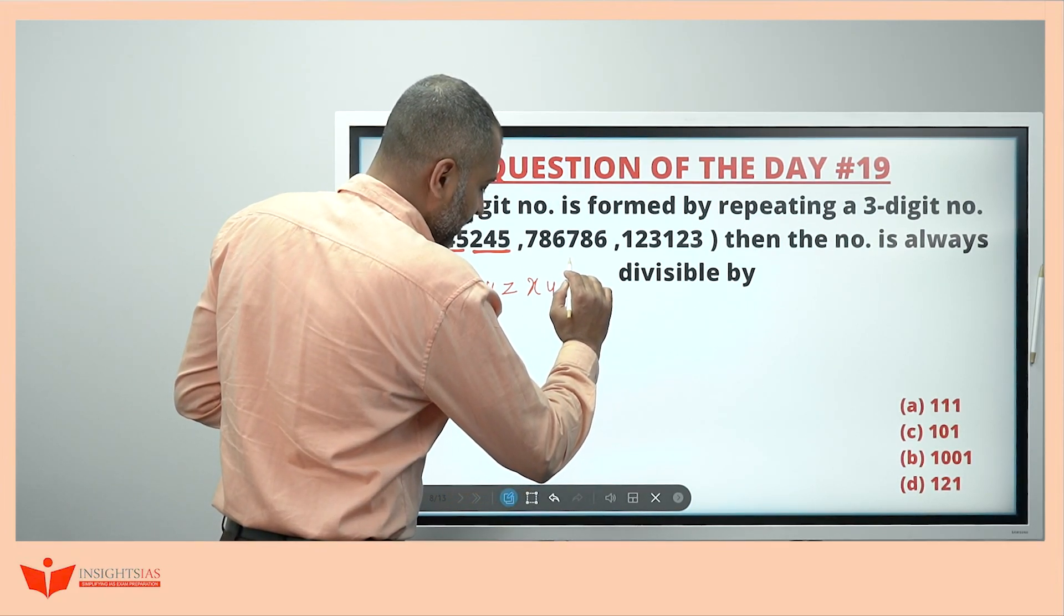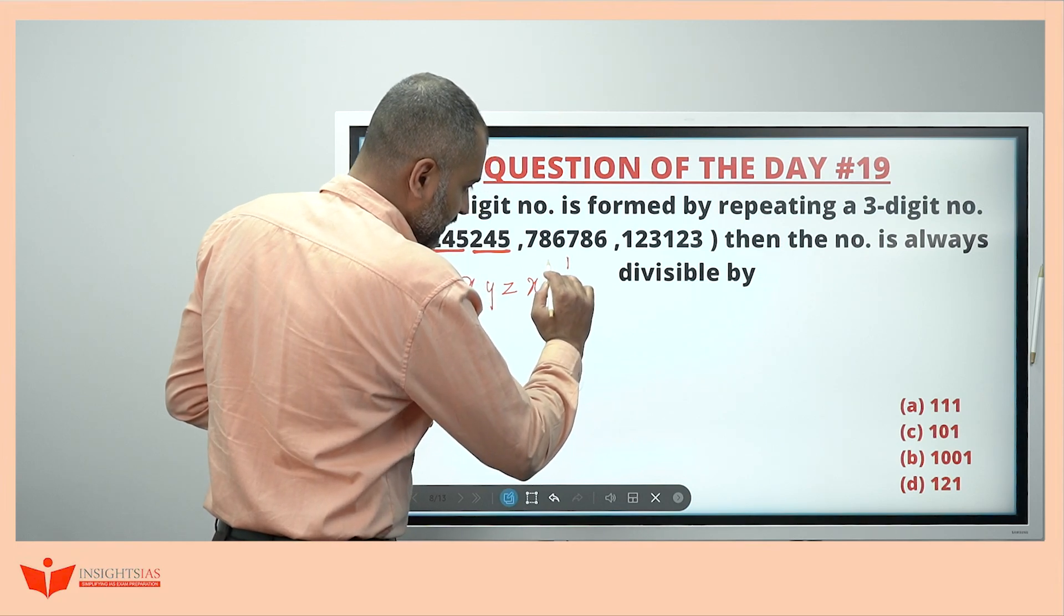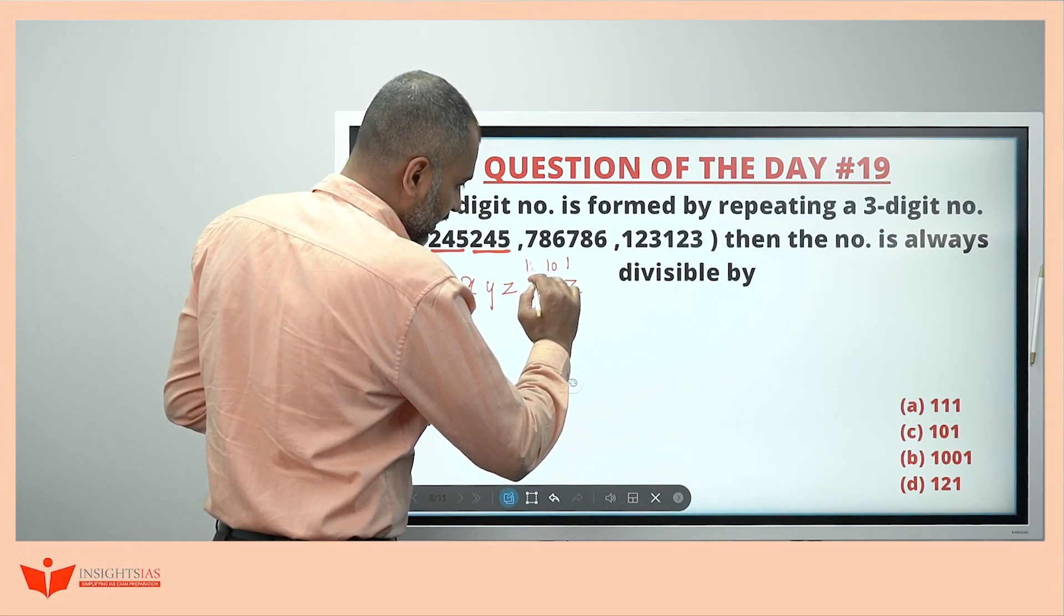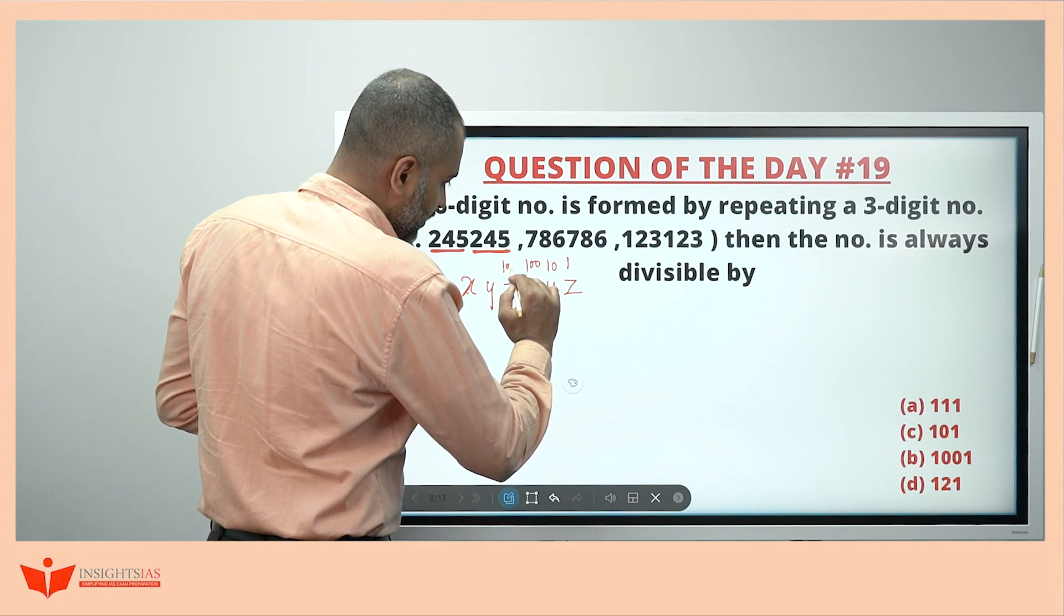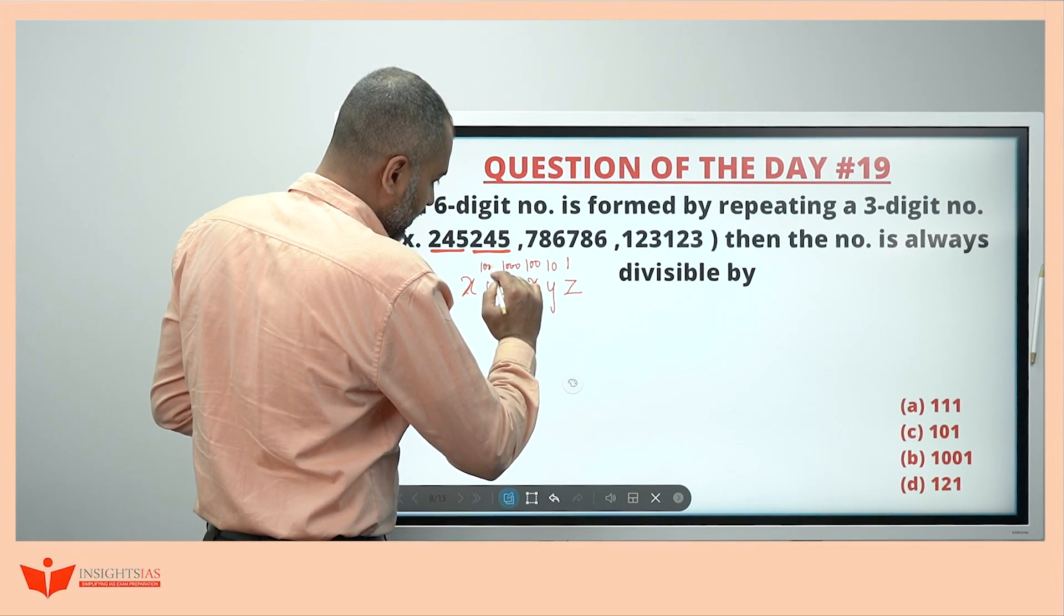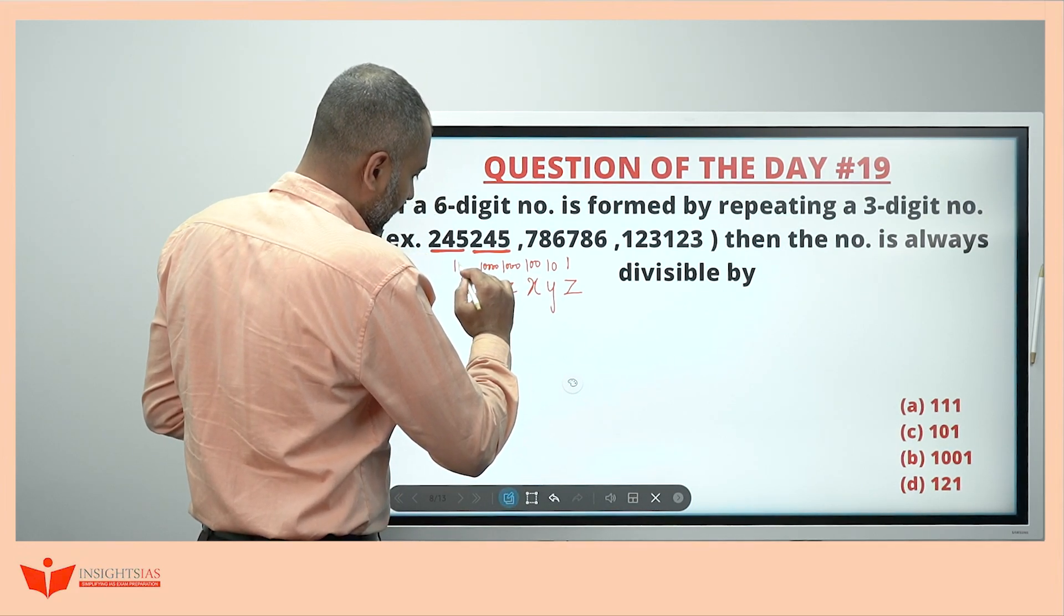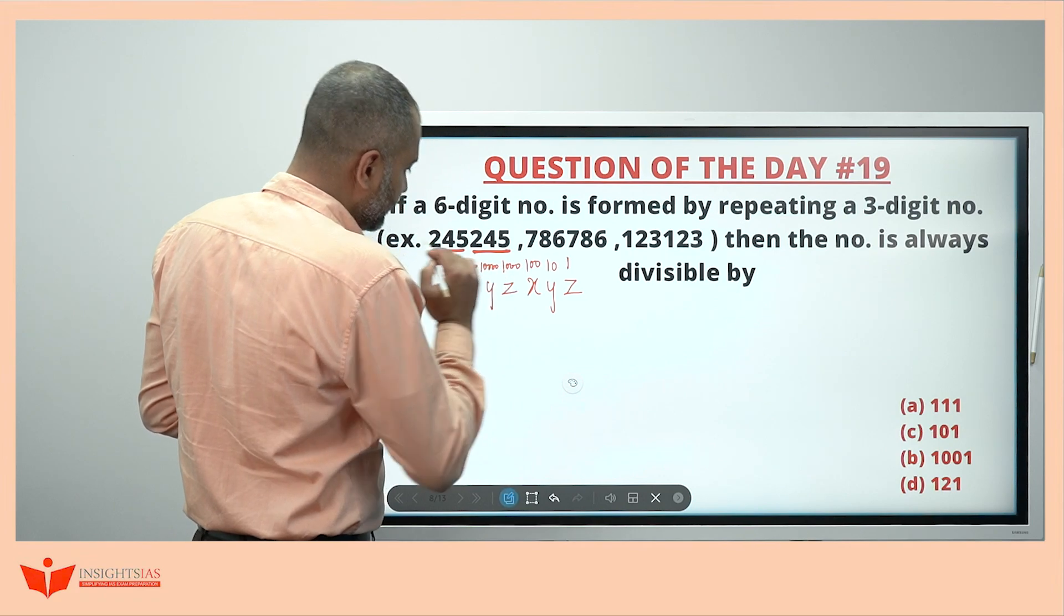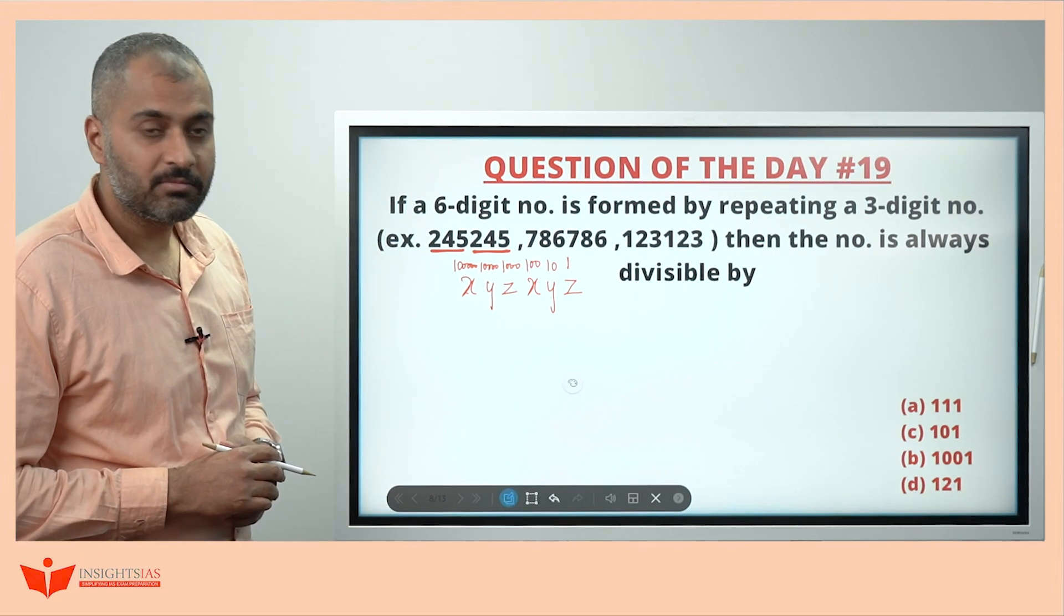This z is the unit digit here. This is at tens place, this is at hundreds place, this is at thousands place, this is at 10,000 place, this is at 1 lakh place, isn't it? Okay.